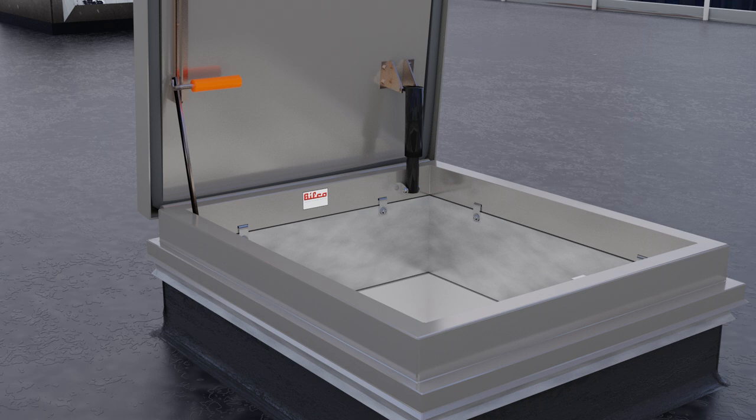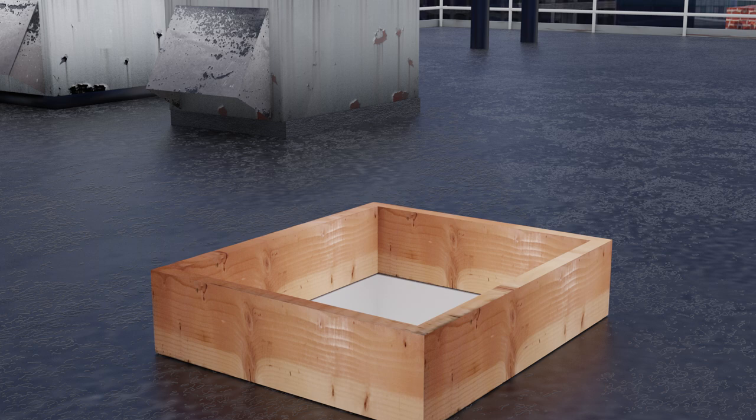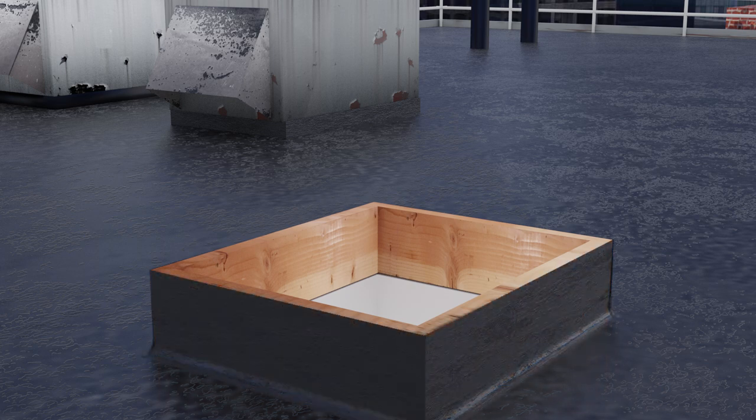Now, let's look at other applications where the Versamount roof hatch can be utilized. For a job-built wood curb, simply frame a wood curb to the opening of standard roof hatch dimensions and flash the curb with roofing material.